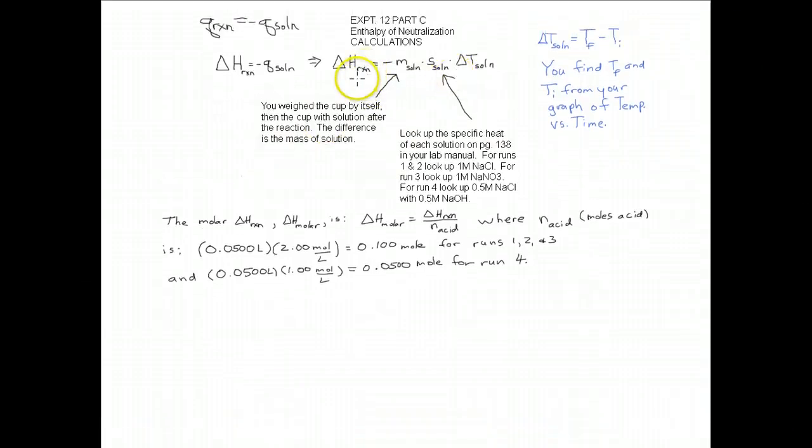All right, so you got the heat of reaction. You're going to do this calculation for each of the runs: run 1, run 2, run 3, and run 4. And also, you're going to calculate the molar heat of reaction, delta H molar for each of the four runs. It's just going to be the number you got up here, the heat of reaction divided by the number of moles of the acid.